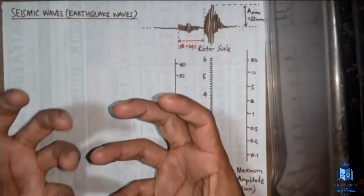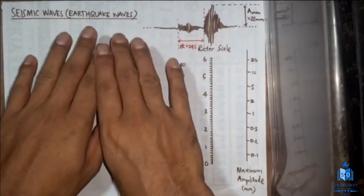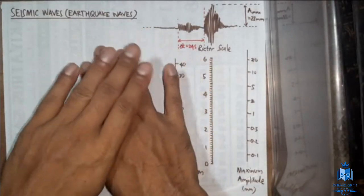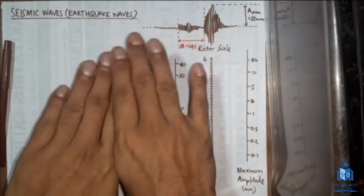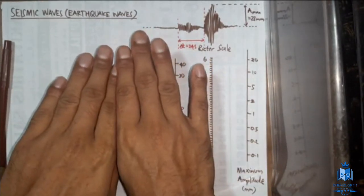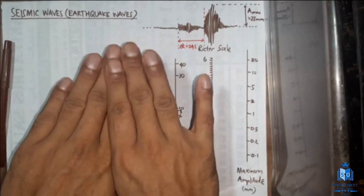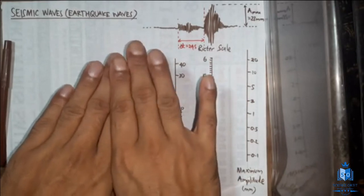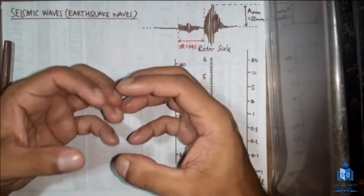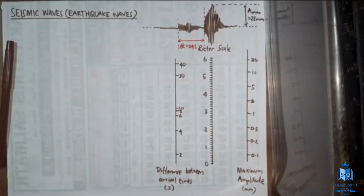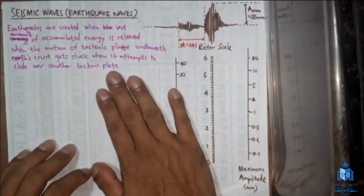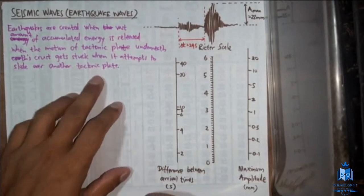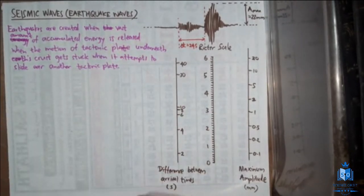Earthquakes cause great damage because a lot of energy is released. To summarize: tectonic plates move above each other; sometimes they get stuck and their motion is restricted; due to friction a large amount of energy accumulates; and when that accumulated energy is released it causes earthquakes — that's why earthquakes are dangerous.